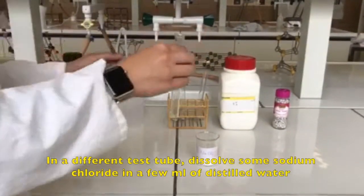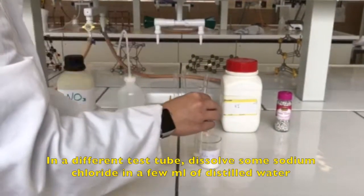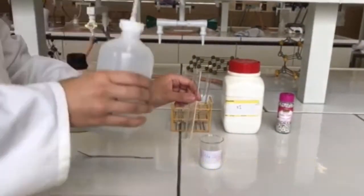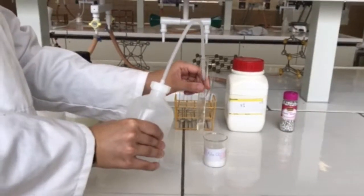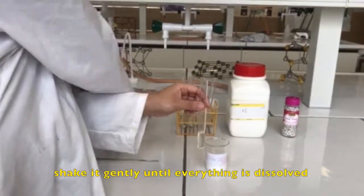In a different test tube, dissolve some sodium chloride in a few milliliters of distilled water. Shake it gently until everything is dissolved.